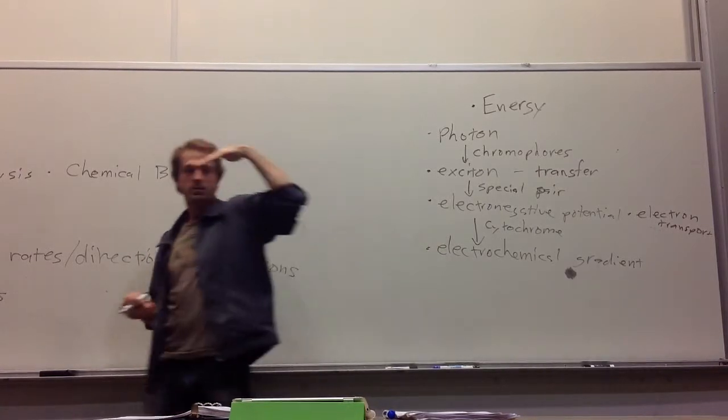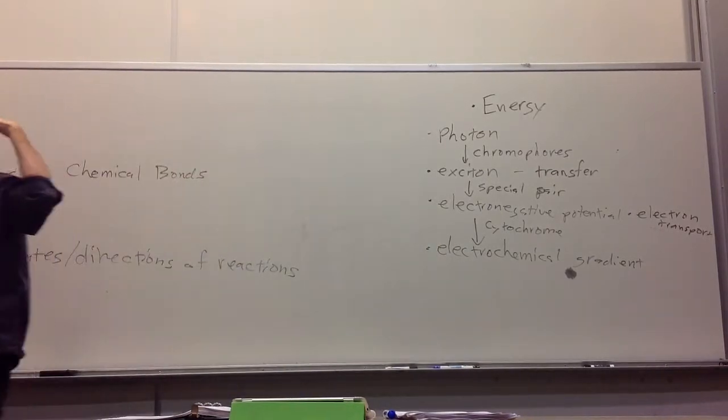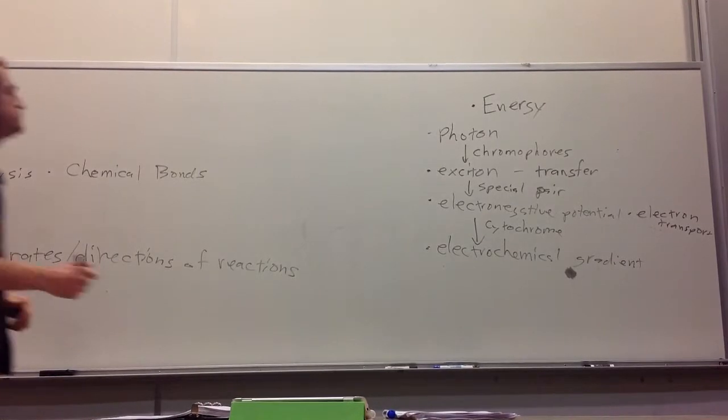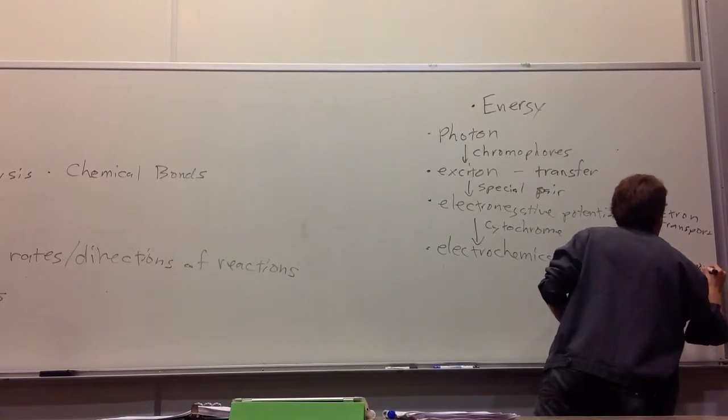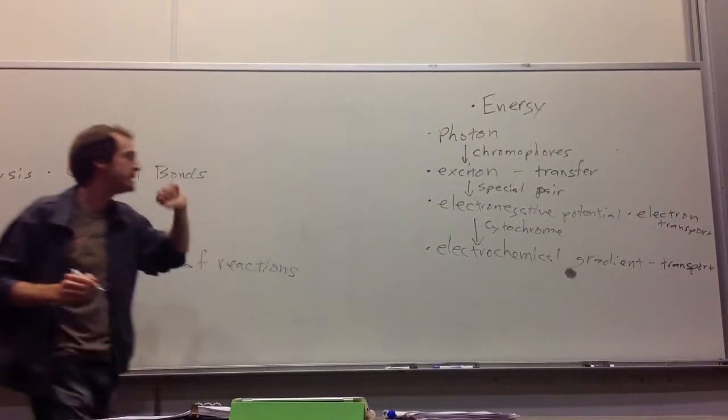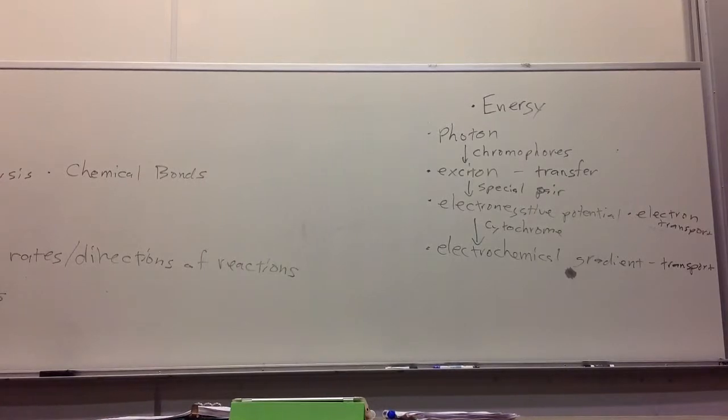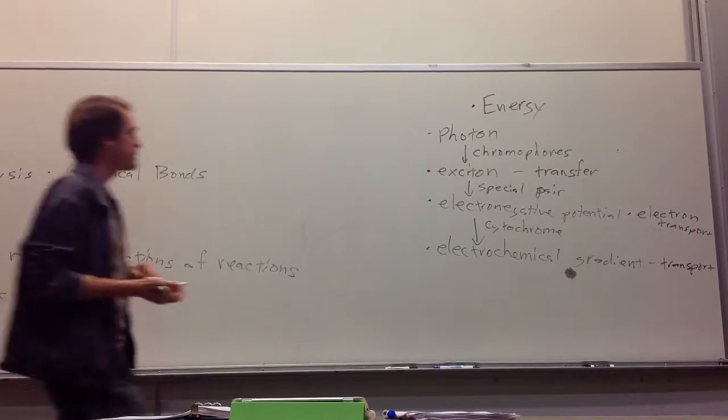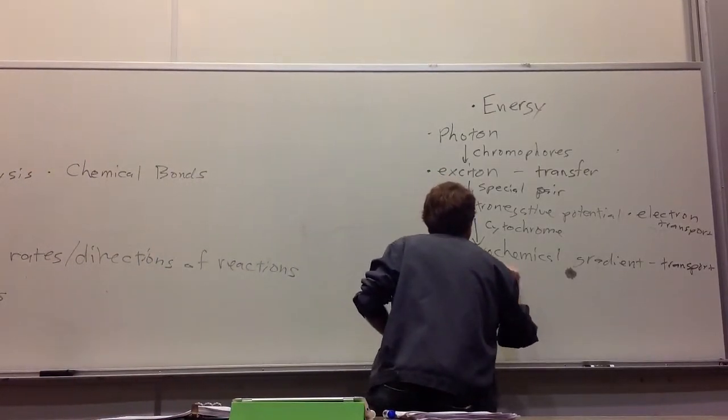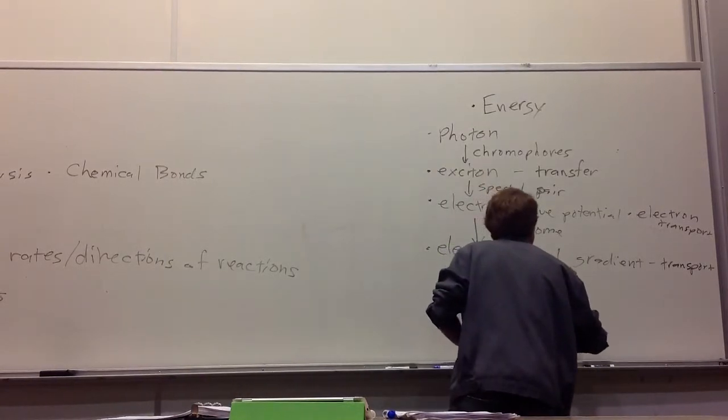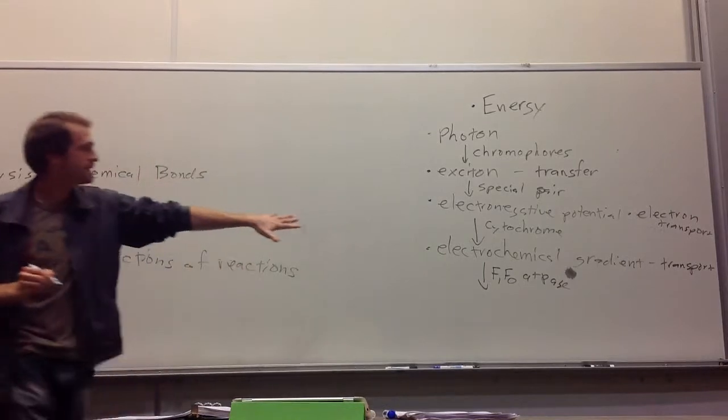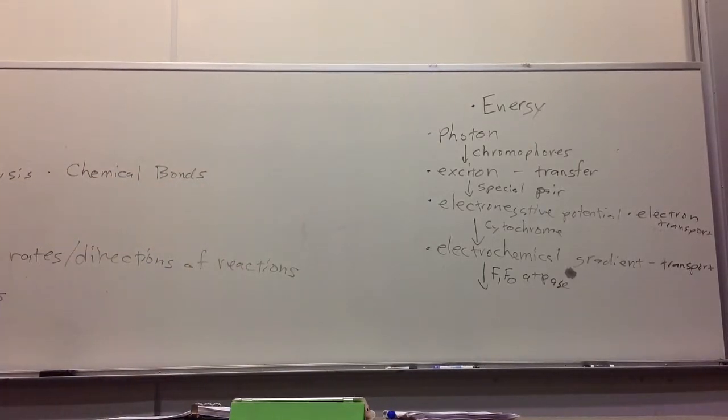And we know that there's energy in that electrochemical gradient. The electrochemical gradients in living systems are almost like batteries. They're this source of energy across a membrane that we can use for transporting things. But this electrochemical gradient is also used to form the chemical energy currency through the F1 F0 ATPase, which you guys covered in 108B. We can take that electrochemical gradient, turn that energy into chemical bonds, high-energy phosphate bonds.